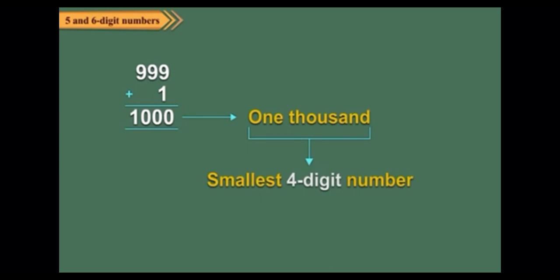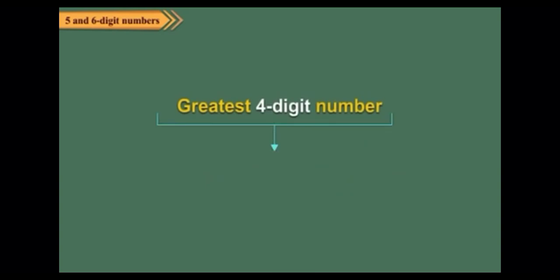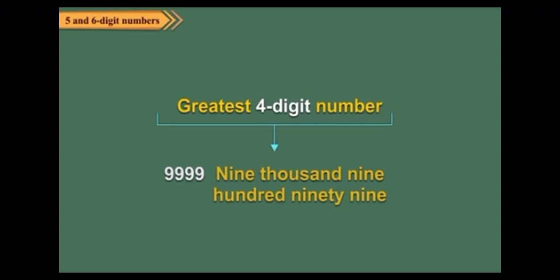Numbers go on increasing. In this way we come to the greatest four-digit number, 9999. It is read as nine thousand nine hundred ninety-nine. Do you know what happens when we add 1 to 9999? Simple, we get 10,000, which is the smallest five-digit number. We read it as ten thousand.